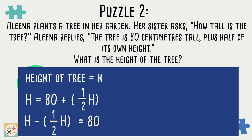If we take half of the height away from the total height, we are left with the other half of the height. We can see this also equals 80 centimeters. Now we know that half the height is 80 centimeters, we can substitute this back into the original equation and calculate the entire height of the tree.